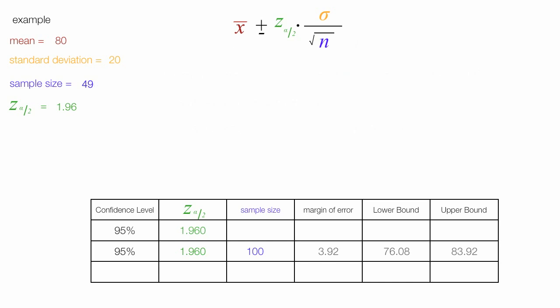Now I'm going to reduce the sample size to 49, about half. The margin of error is equal to 1.96 times 20 — the standard deviation — divided by the square root of 49, which is 7. This equals 1.96 times 2.9 divided by 7, which is equal to 5.68.